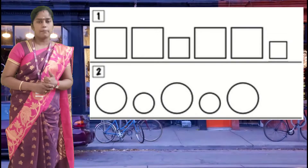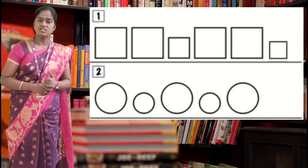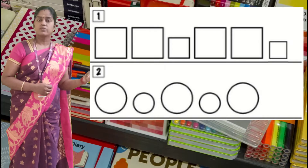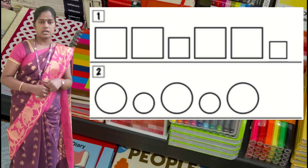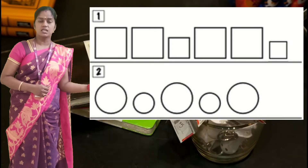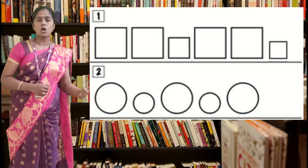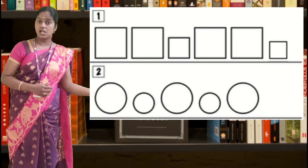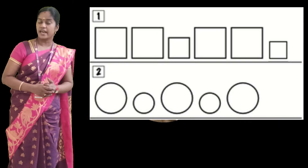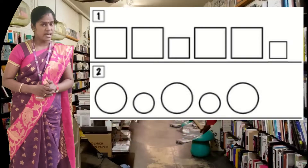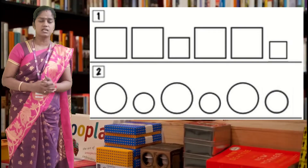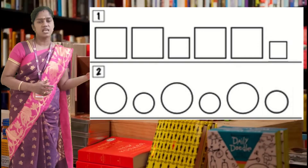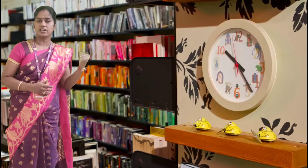One more example of pattern in sizes: a big circle, a big circle, a big circle, then a small circle, then a big circle — what comes next? Yes, it is a small circle. This is how patterns in sizes are created.